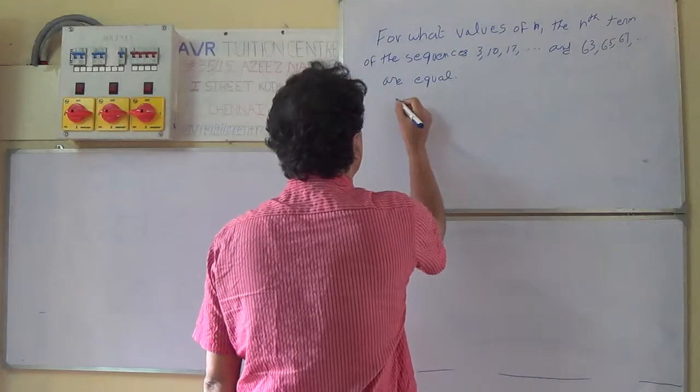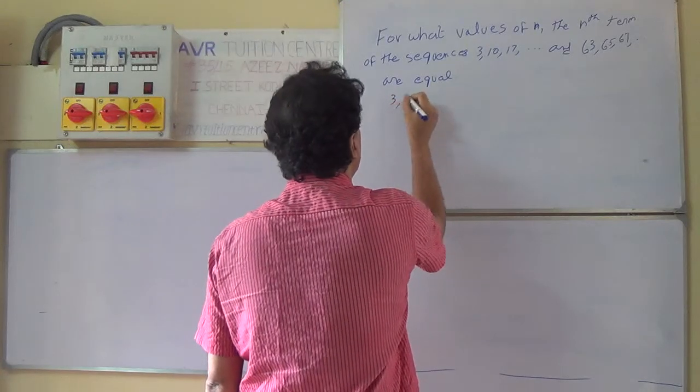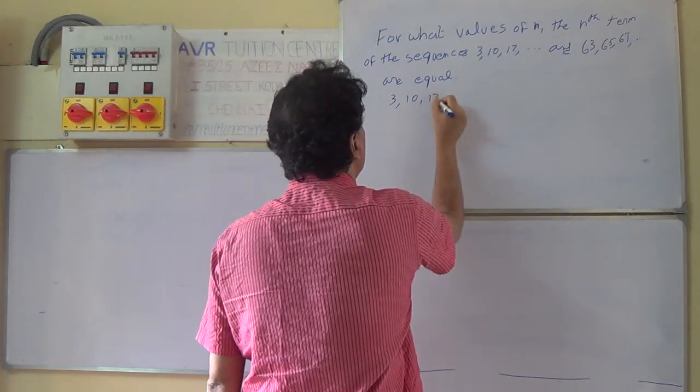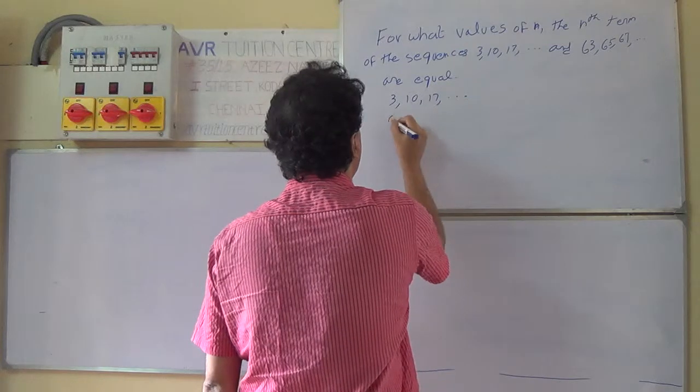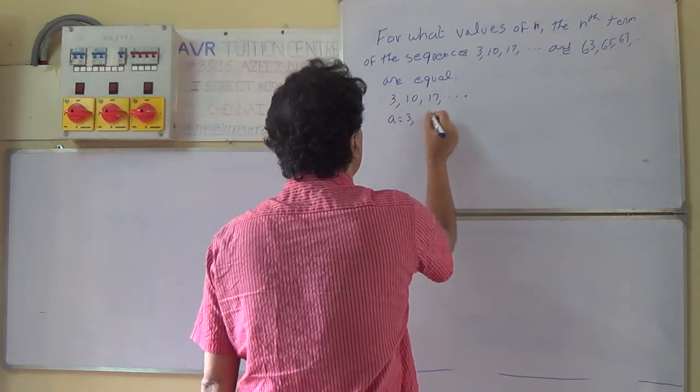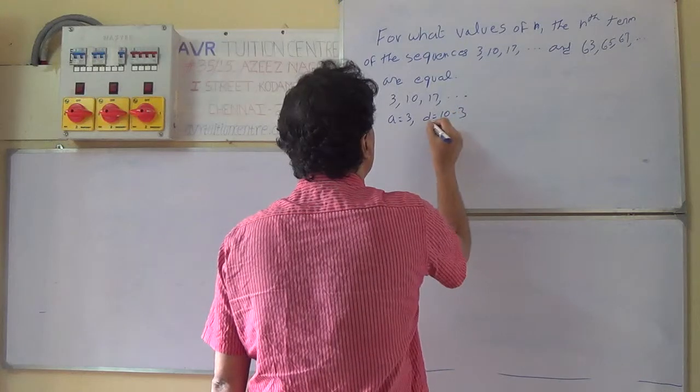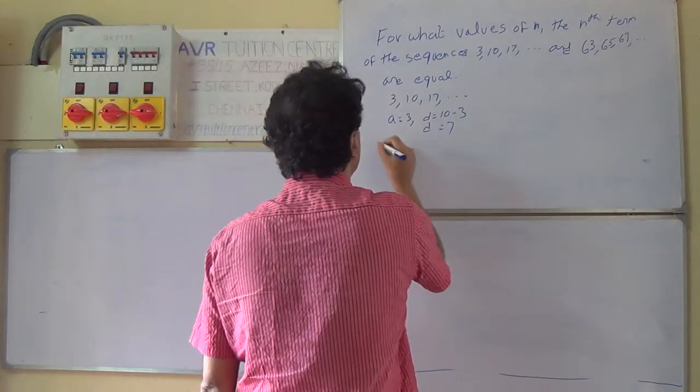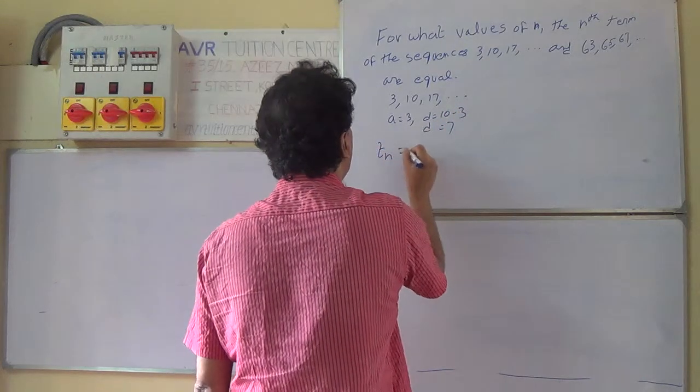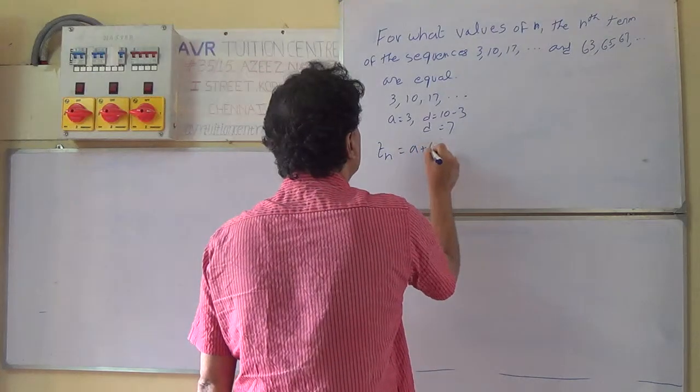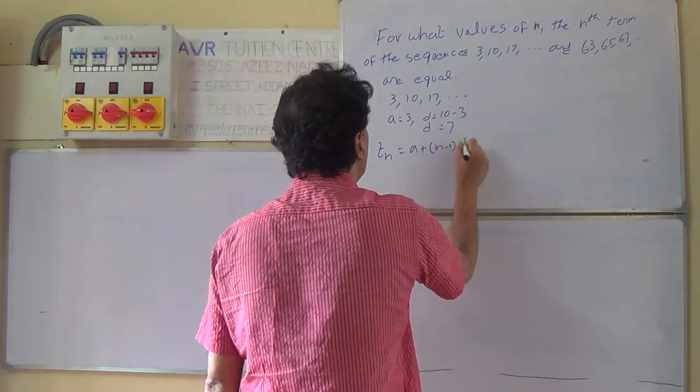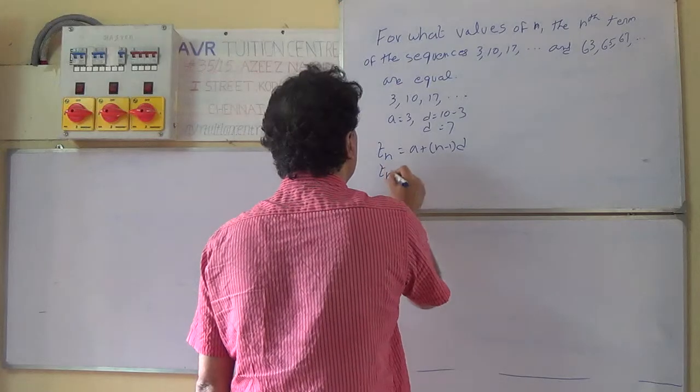Let the first sequence be 3, 10, 17 and so on. Here a equals 3, and d equals 10 minus 3, so d equals 7. Therefore tn equals a plus n minus 1 into d.